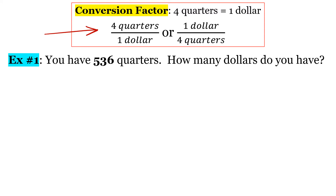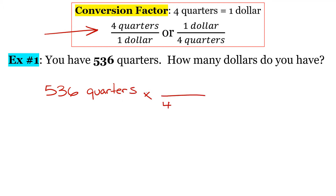Let's start out with what we have. We know we have 536 quarters. And then we know there are four quarters in every one dollar.